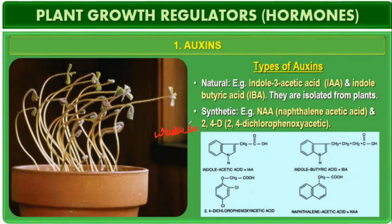Synthetic auxins include 2,4-D — 2,4-dichlorophenoxyacetic acid — which is used as a weedicide, and NAA — naphthalene acetic acid. So the four compounds are: IAA (indole-3-acetic acid), IBA (indole-butyric acid), NAA (naphthalene acetic acid), and 2,4-D (2,4-dichlorophenoxyacetic acid).